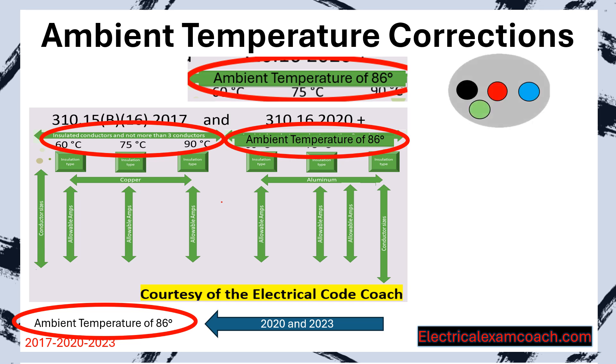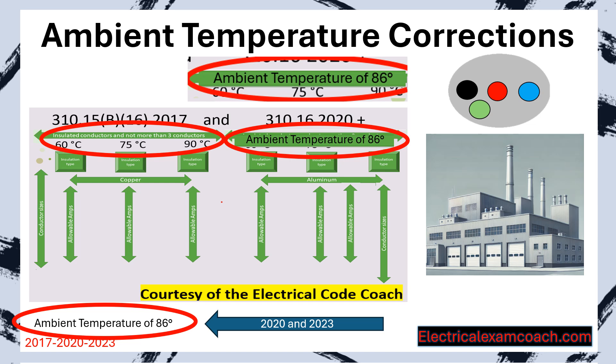Let's imagine we have a circuit with black, red, blue, and an equipment grounding conductor. We know from the previous lesson that we will not have to do a bundling adjustment because there are not more than three current-carrying conductors. But what if we were in a factory running a plastic process that had to be kept at exactly 115 degrees at all times for the machines to function properly? That's the scenario we're going to learn about in this lesson.